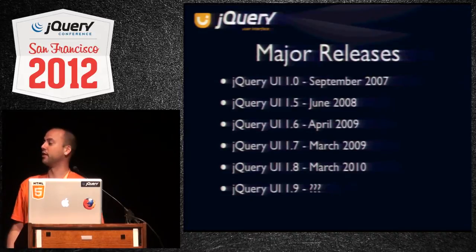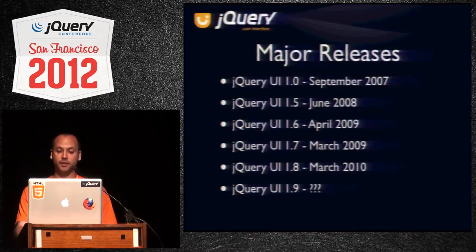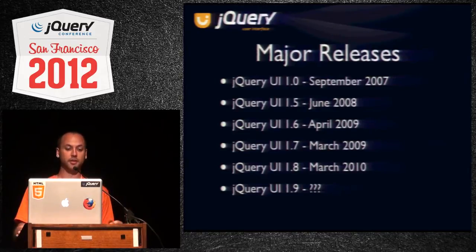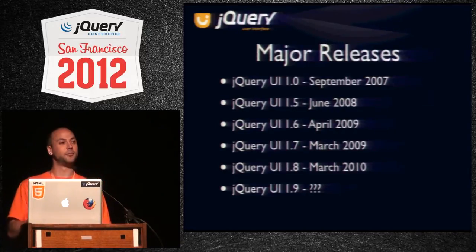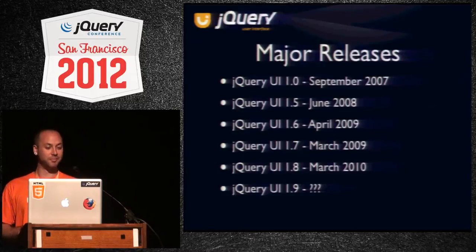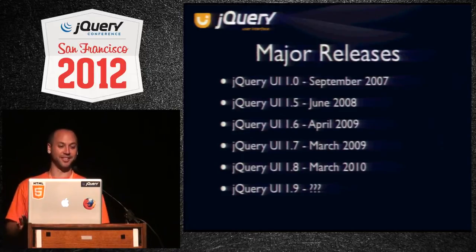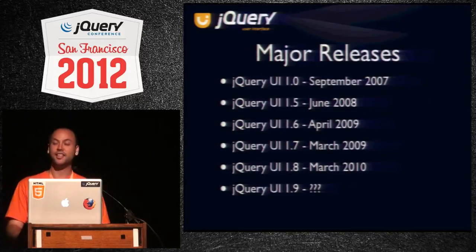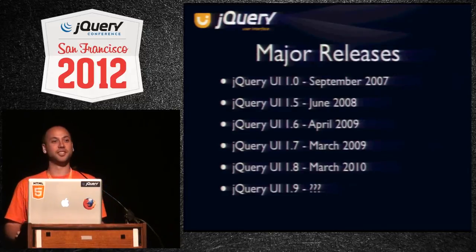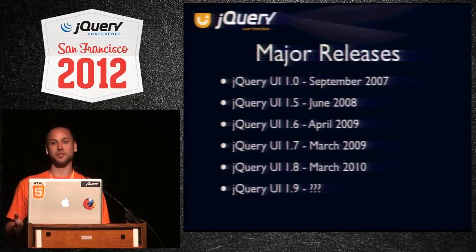Going over the history of jQuery UI: it first came out in September of 2007, and about a year later we put out 1.5, then about a year later we put out 1.6, and then we went back in time and put out 1.7. Then a year later we put out 1.8, and then we stopped doing releases because Core decided they were putting out too many releases and it was a bad idea.